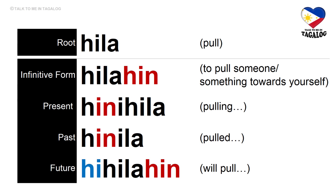Our next root word is synonymous to hatak. Root word: hila — it also means pull. Infinitive form: hilahin — to pull someone or something towards yourself. Present tense: hinihila — pulling. Past tense: hinila — pulled. Future tense: hihilahin — will pull.